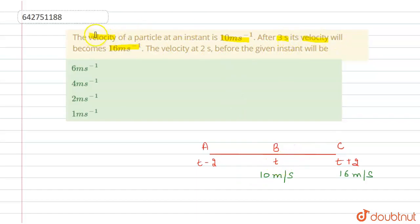The velocity at 2 seconds before the given instant will be what we need to find. So we have to find the velocity at 2 seconds before, which means we have to find the velocity at point A.